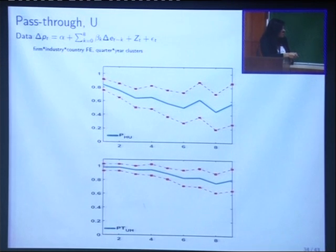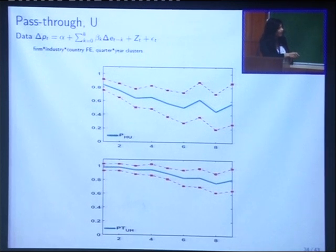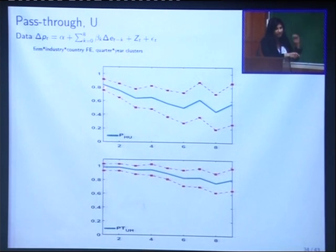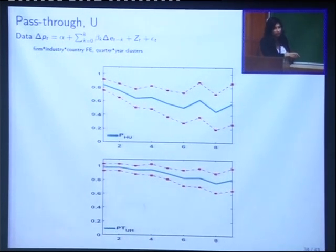If I look at the pass-through into Colombian pesos — looking at goods coming from the U.S. into Colombia — this is basically that equation being estimated. This is the pass-through in the first quarter, the second quarter, the fourth quarter, and the eighth quarter. This is saying that if the Colombian peso depreciates by 10% relative to the dollar, export prices in Colombian peso terms going to the U.S. go up 8 percentage points, and then come down to around 5 percentage points.